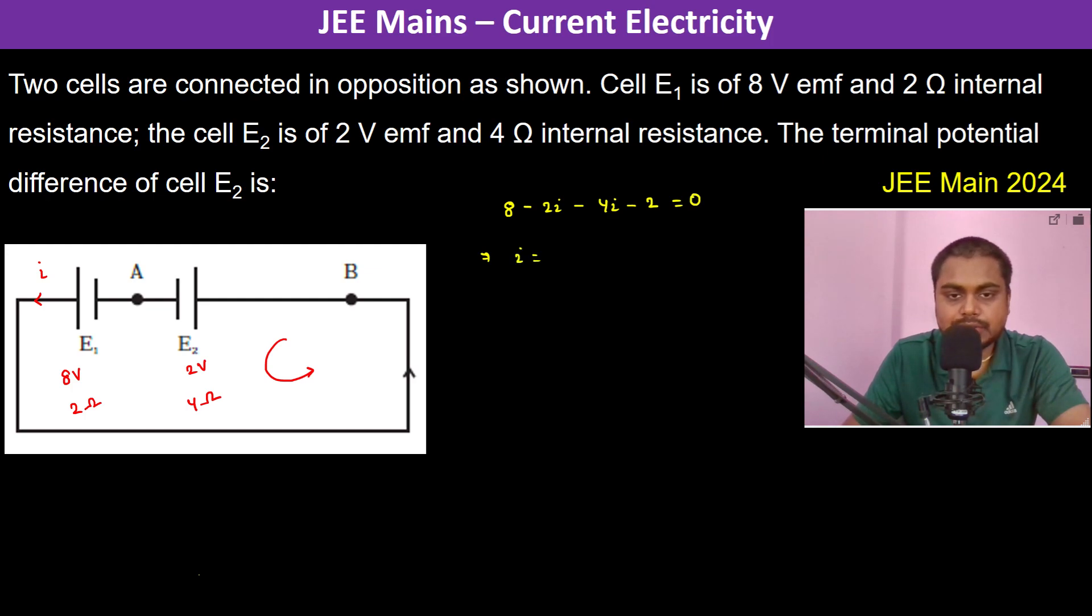Therefore I becomes 6 by 6 which is 1 ampere. Now if we consider this E2, we can see very clearly it's something like this. This is 4 ohm and this is 2 volts, and this is the cell.